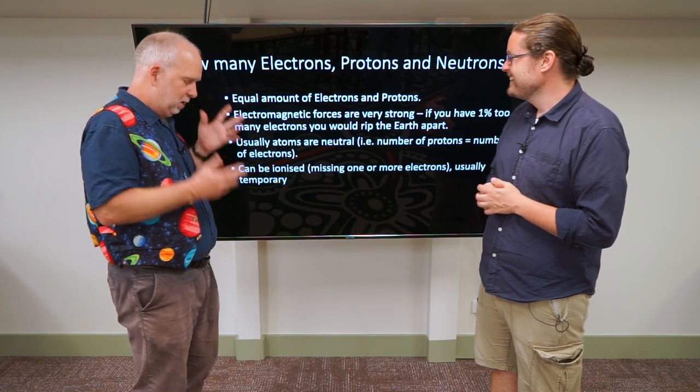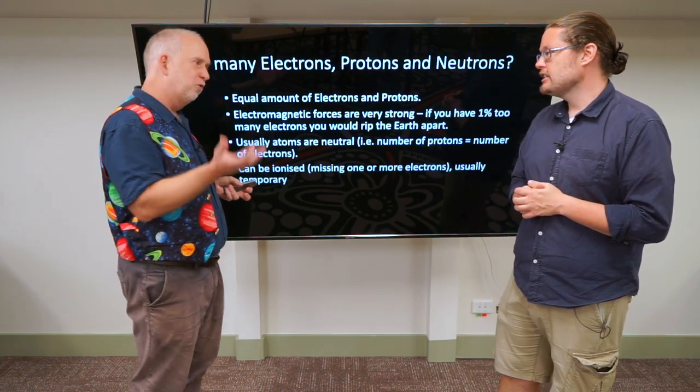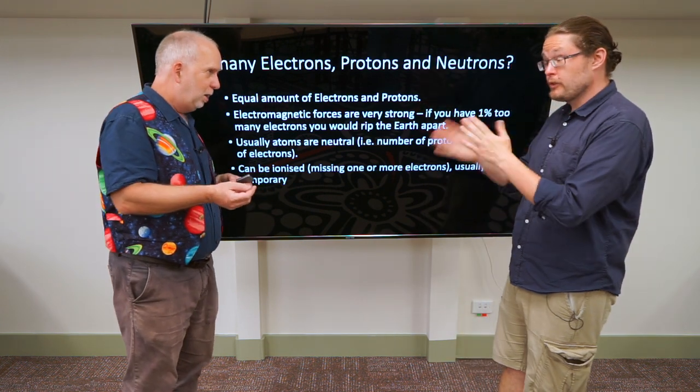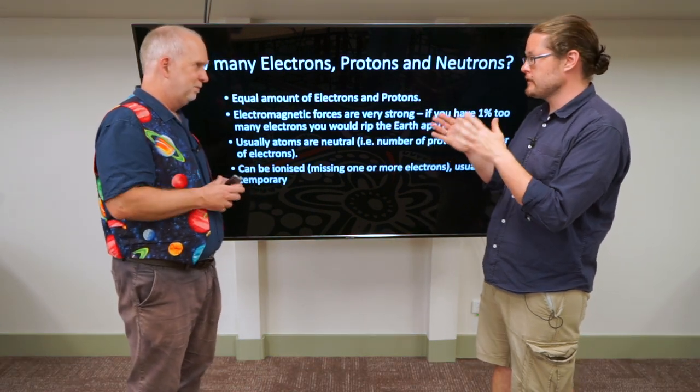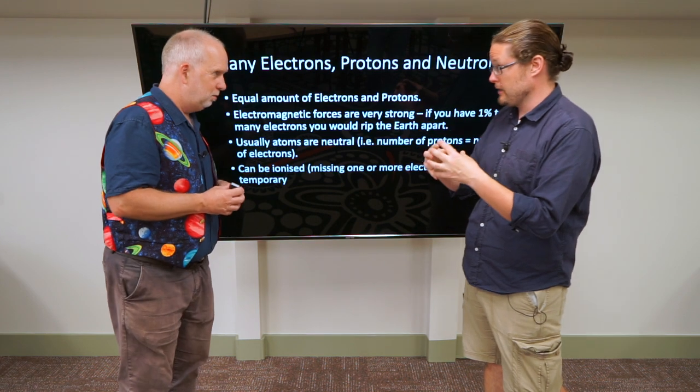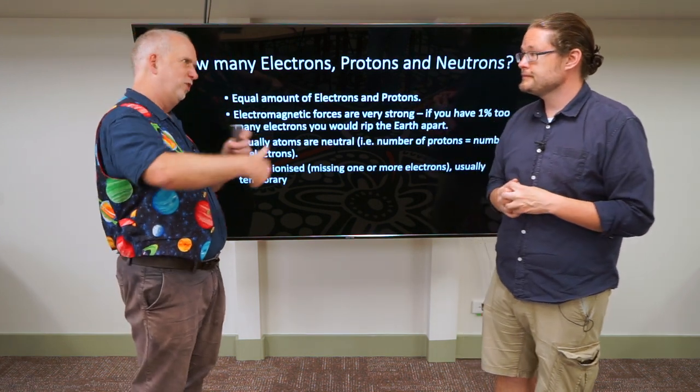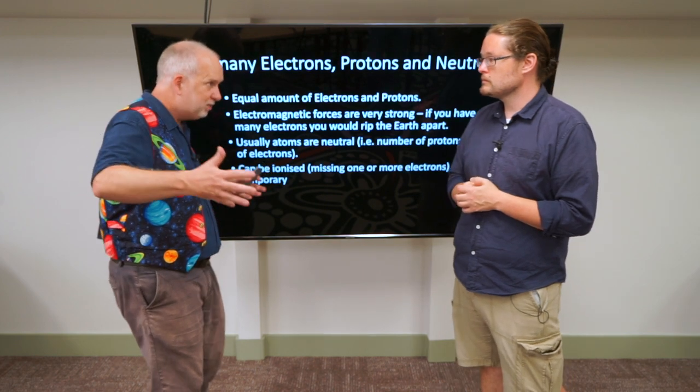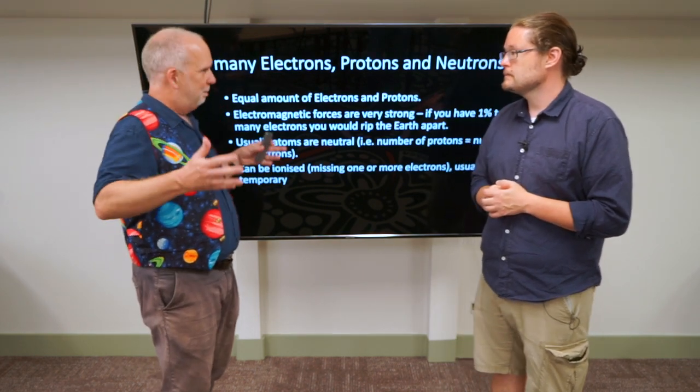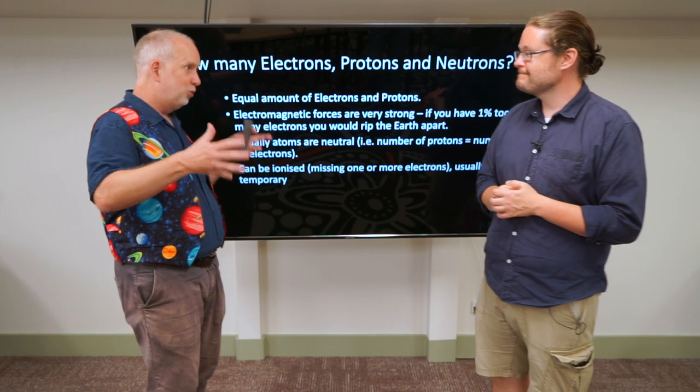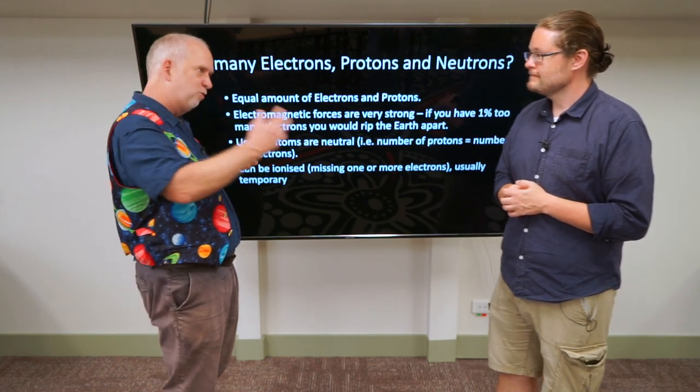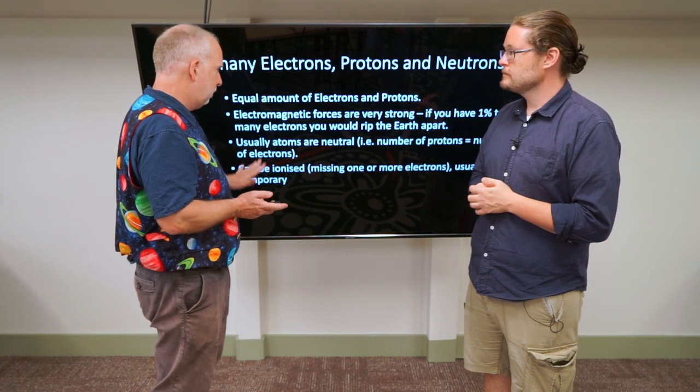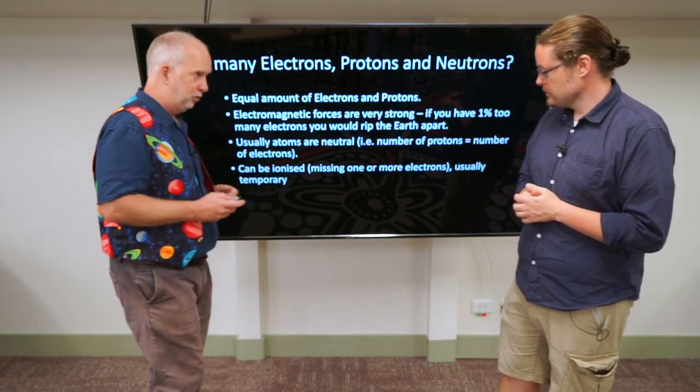So by and large, the number of electrons must match the number of protons. You do get atoms where you've stripped some off - it's called an ion. Those do exist, but they don't exist as much as the neutral atoms. And even if they do, the electrons are still usually wandering around somewhere in the vicinity. So an overall cloud of ionized gas, which is called a plasma, which we're going to talk about much more, are also still neutral. So that's easy - number of electrons equals number of protons.